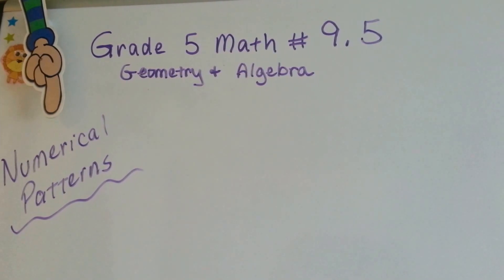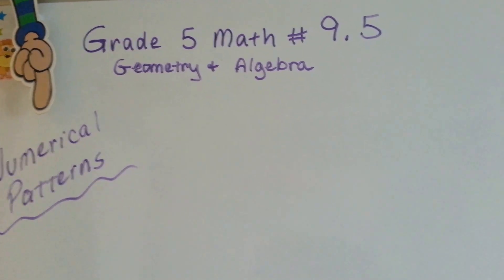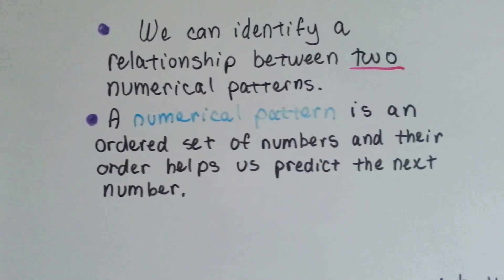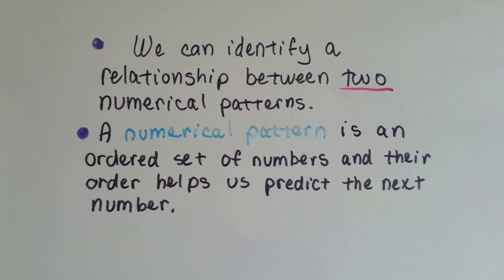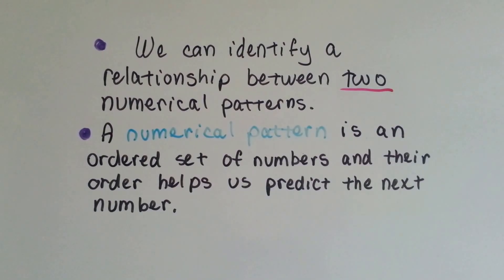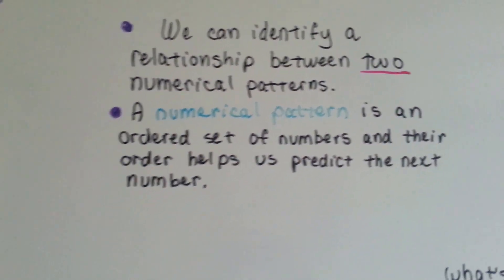Grade 5 math number 9.5, Numerical Patterns. We can identify a relationship between two numerical patterns. A numerical pattern is an ordered set of numbers, and their order helps us predict the next number.